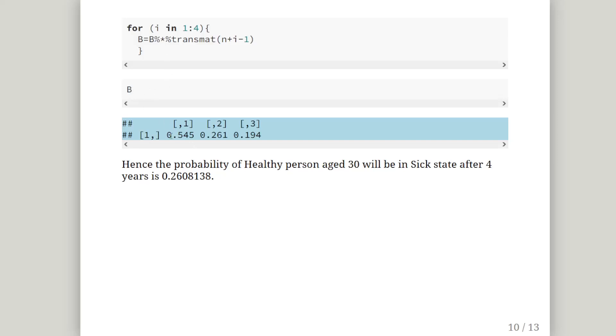So there we have it. So that's what b will look like after the four years. This is the probability that the person will be healthy at 33, this is the probability that they'll be sick at 33, and this is the probability that they'll be dead at 33. So essentially the probability of a 30 year old being sick in four years time is 26%, or 0.2608138.